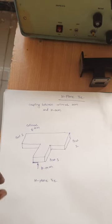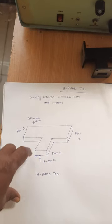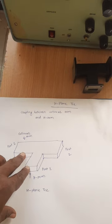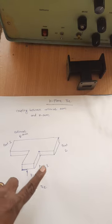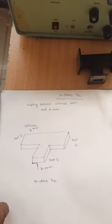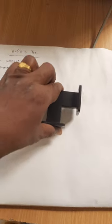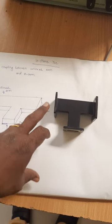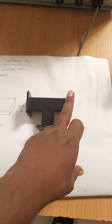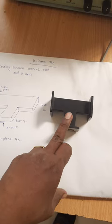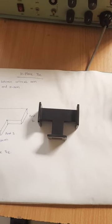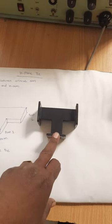My first objective is to calculate the reference voltage before insertion of the H-plane T, noting it as V1. Then after, I will insert the H-plane T into the microwave waveguide test bench and take readings again. Here you are observing the actual block of the H-plane T — exactly similar to the conceptual diagram. Port one, port two are the collinear arms, and port three is the H-arm.